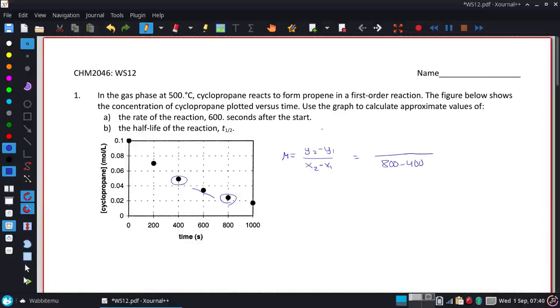And then the only thing that's relatively challenging, since I didn't give you the data, is to estimate where these are with respect to the Y-axis. So I would say that's about halfway through. So I'm going to say this is at 0.025.